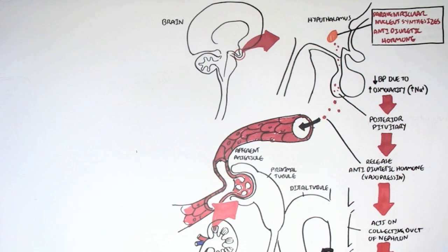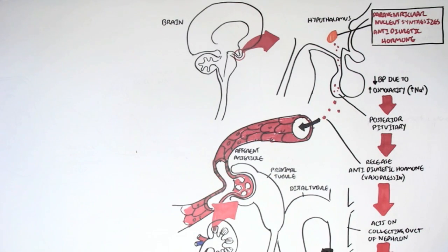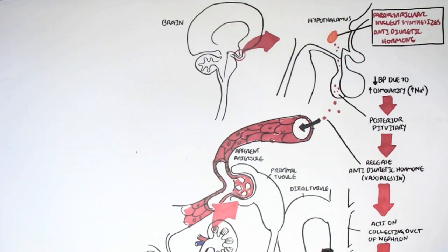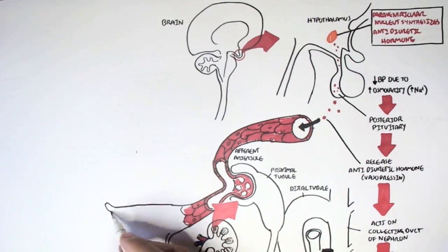Now let's look at the second hormone, aldosterone, which is also secreted in response to a decrease in blood pressure, and its main function is likewise to increase blood pressure.